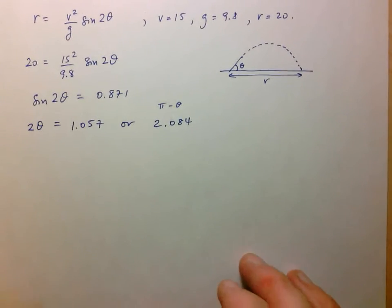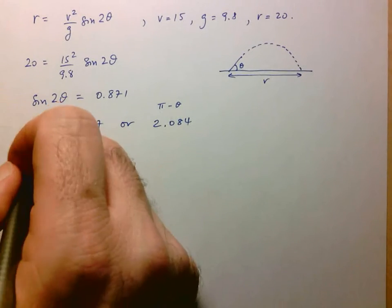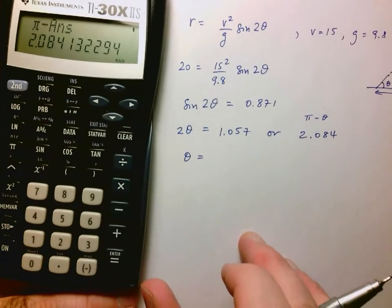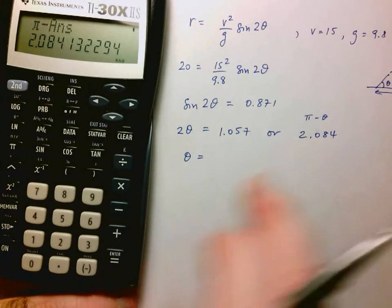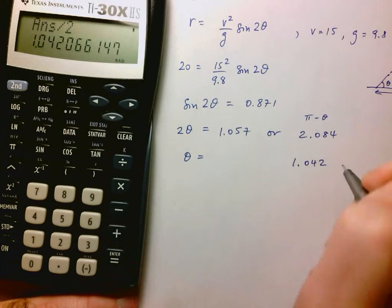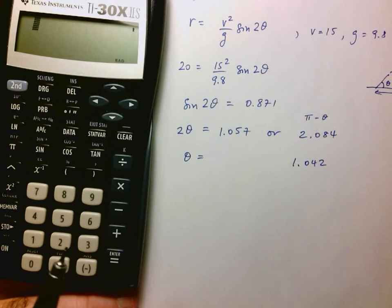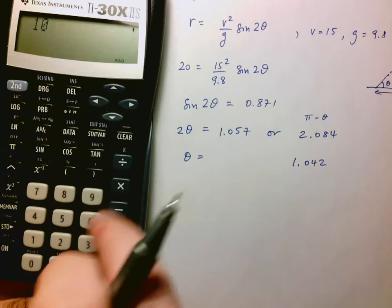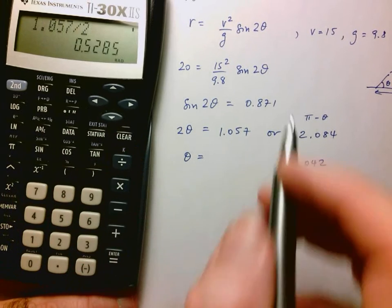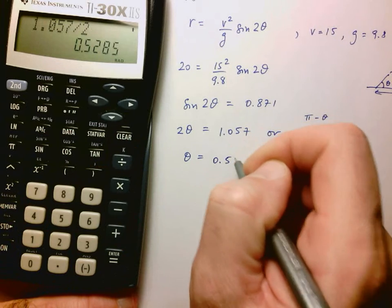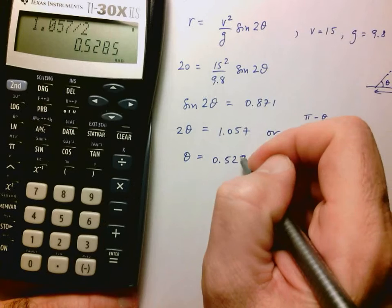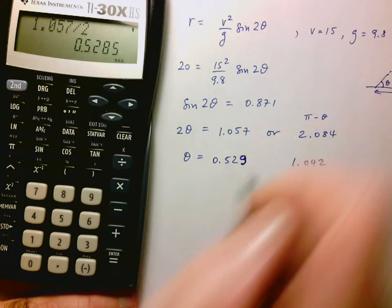Step three - we have to isolate theta. Let's start by doing the second one because we can just divide that one by two. So we've got 1.042, and the other one would be 1.057 divided by two, which is 0.529.